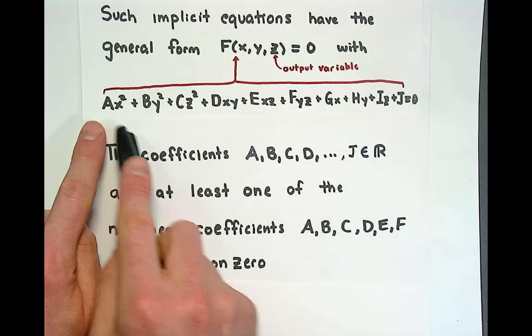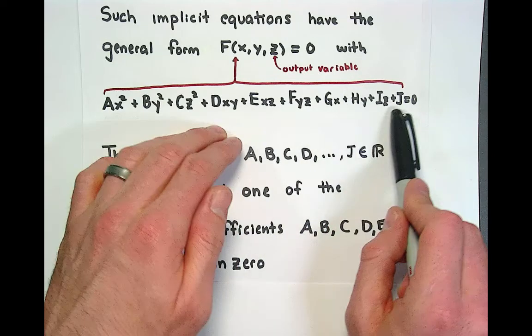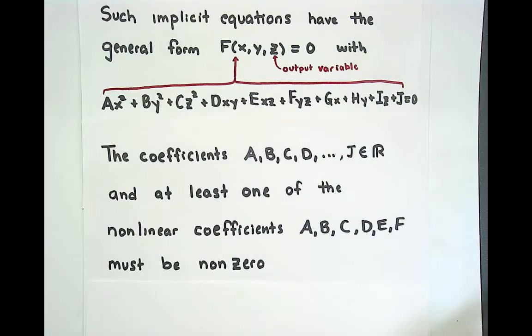And the reason we make that assumption is assume that a, b, c, d, e, f are all zero, well that's an equation of a plane. A plane is not a quadratic surface. A plane is a linear surface.